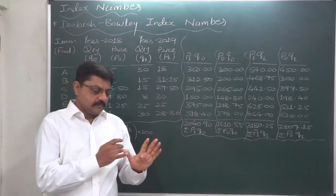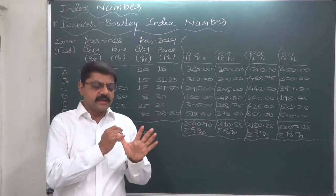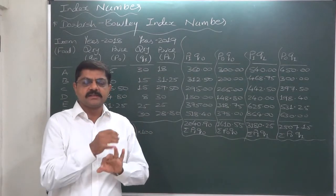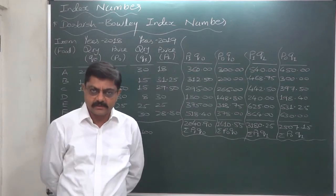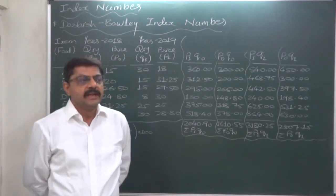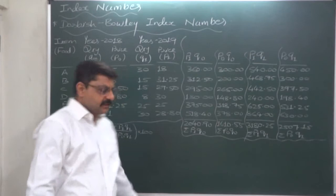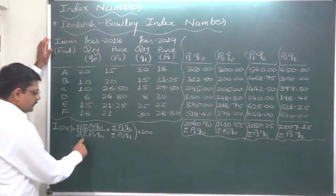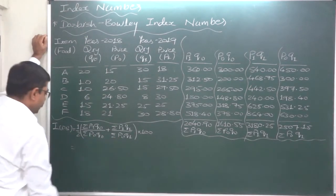Along with Dorbish and Bowley index number, we also study Marshall-Edgeworth index number and some others. But these five are the main ones in most universities: Laspeyres' index number, Paasche's index number, Fisher's index number, Dorbish and Bowley index number, and Marshall and Edgeworth index number — which I am going to explain in the next lecture. But first, in this lecture, let's calculate Dorbish and Bowley index number. It is the arithmetic mean of Laspeyres and Paasche index numbers.